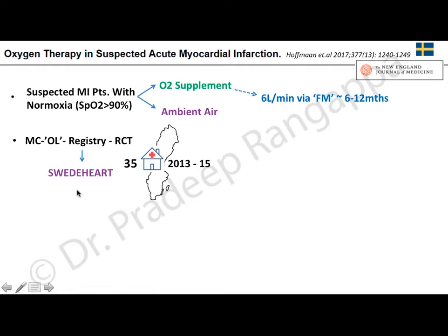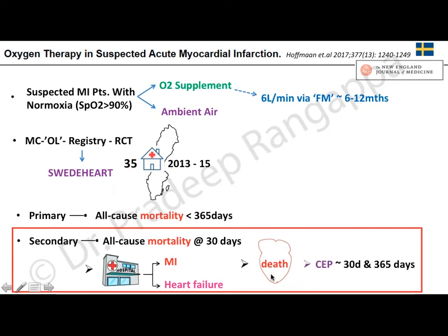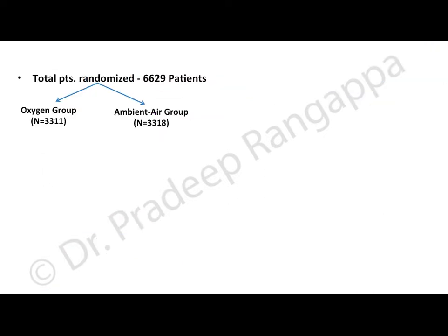Results showed no difference in all-cause mortality at 365 days or at 30 days between patients who received oxygen and those who did not. Re-hospitalization due to MI showed no difference, composite endpoints at 30 and 365 days showed no difference, and median highest cardiac troponin also showed no difference. This was again a non-inferiority study, very similar to the SOCCER trial.